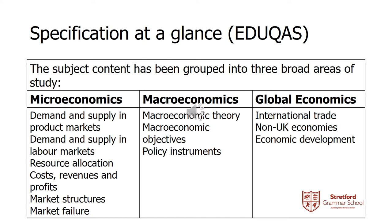Macroeconomics — we look into the macroeconomic objectives and macroeconomic theory, so we're looking at how an economy can grow, things like gross domestic product, unemployment, inflation, those kinds of issues. And then finally we have global economics where we look at international trade, non-UK economies as well, and economic development.